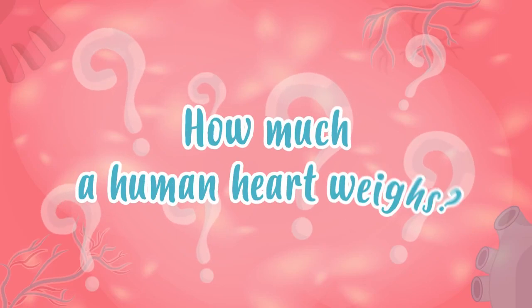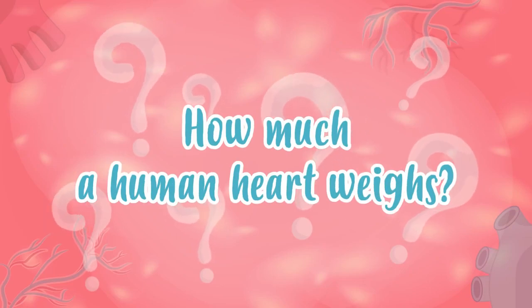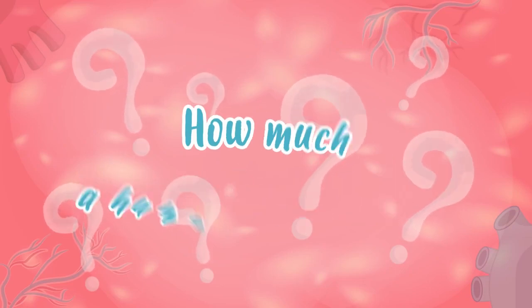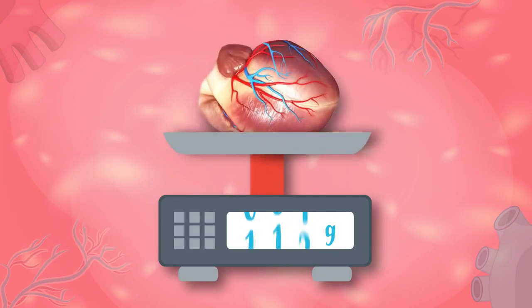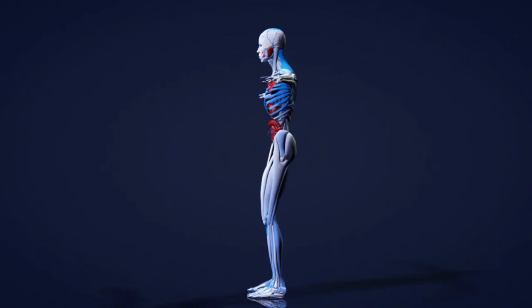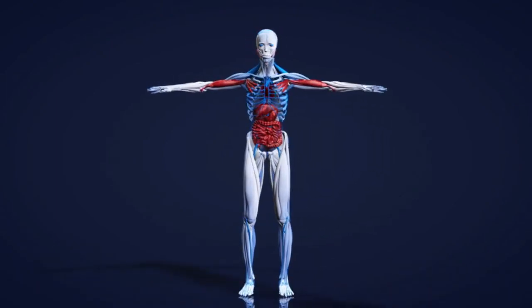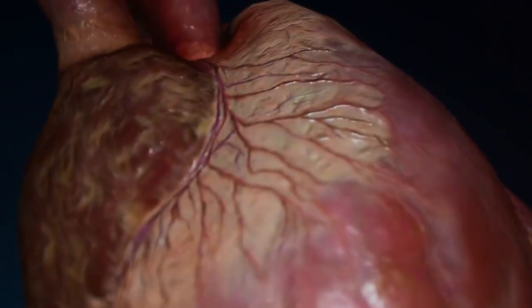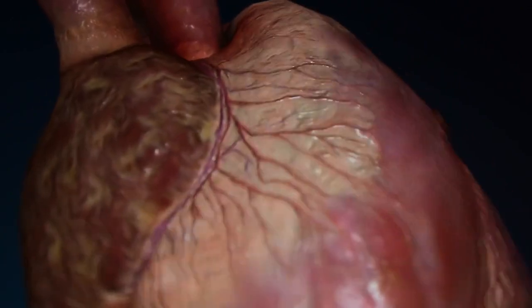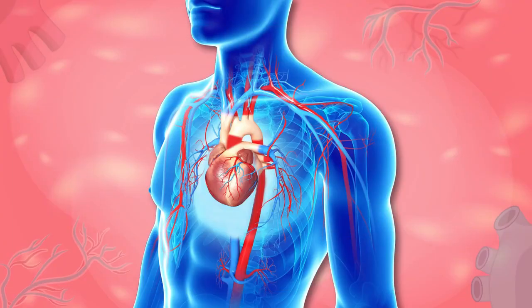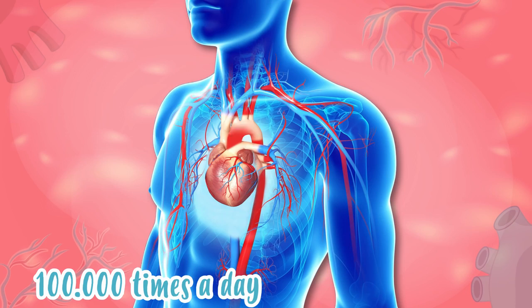Fun fact! Do you know approximately how much a human heart weighs? Well, it's 450 grams — almost half a kilo! The truth is that the heart is the engine in our circulatory system and is an incredibly strong muscle. It's able to beat more than 100,000 times a day! So cool!